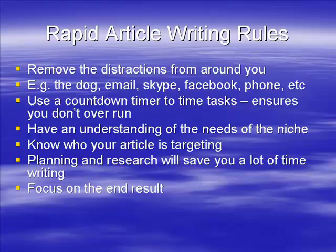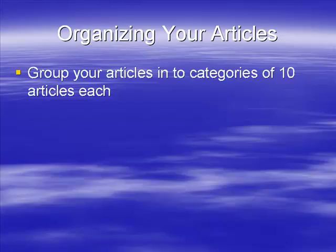What we're focusing on here is the end result — the completed article, not the process of watching it get written. Here are some of my favorite tips for organizing your articles. I tend to write articles in batches of 10 — sometimes 5, but usually 10. Ten articles means 10 submissions, 10 backlinks, and so on, so it's a good number to work in. I group my articles into categories of 10 and create a folder for each one.